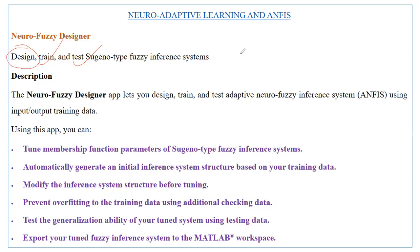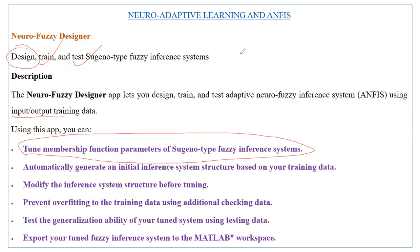In this particular case, we're required to have labeled training data — meaning we need a set of input-output data. With this app, we can carry out tuning of membership functions for the Sugeno type fuzzy inference system. We can also automatically generate our starting inference system structure after importing the training data set, and carry out modifications to the original fuzzy inference structure before conducting that tuning.